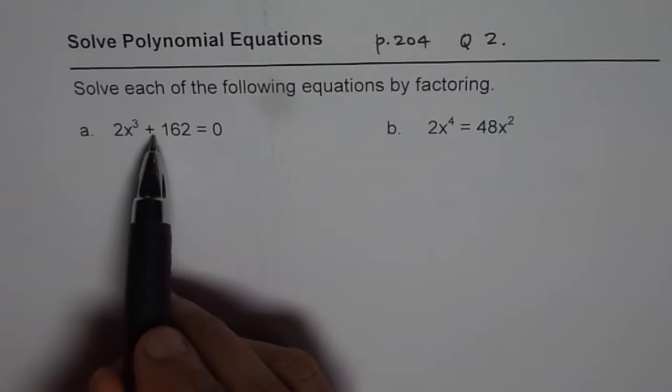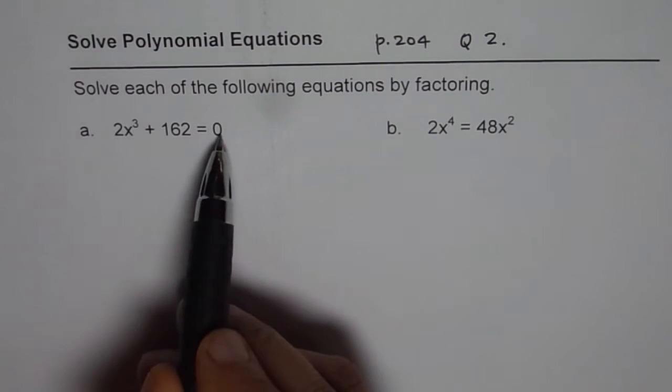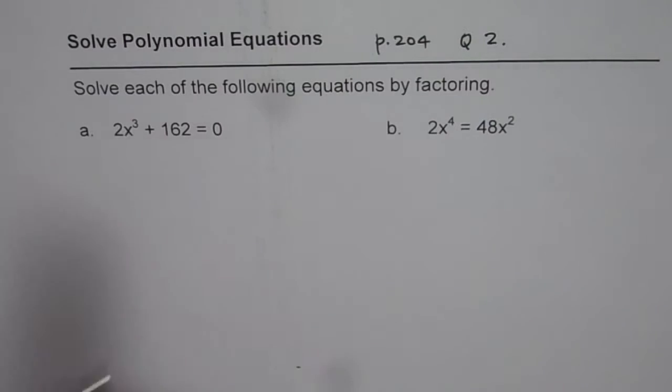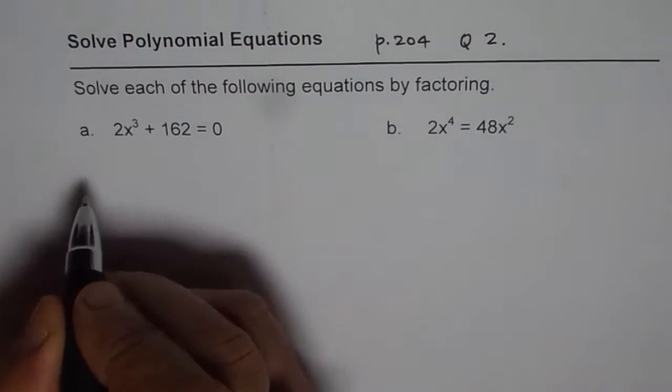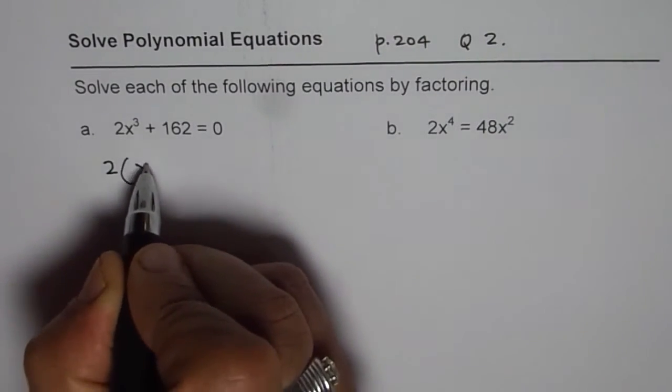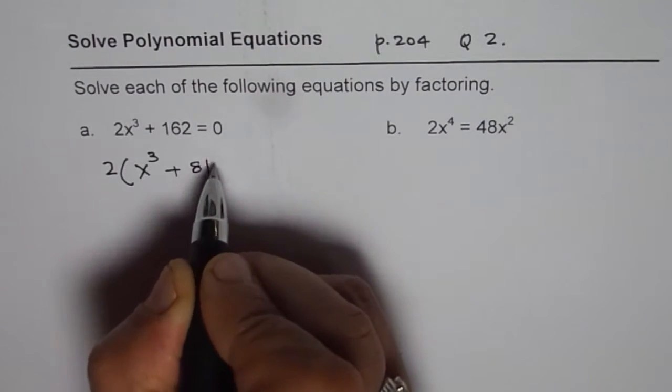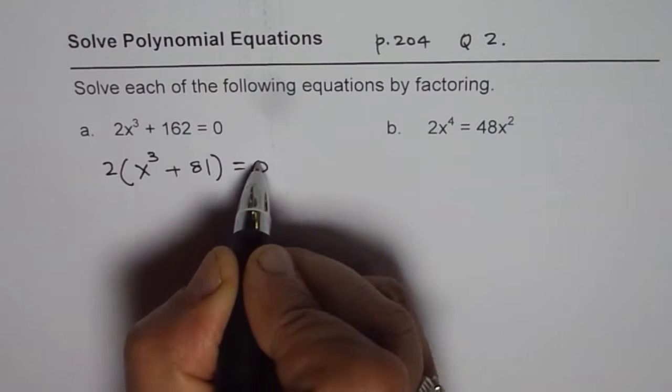We have 2x³ + 162 = 0. It says solve each of the following equations by factoring. Let us factor. If you factor 2, you get x³ + 81 = 0, right?